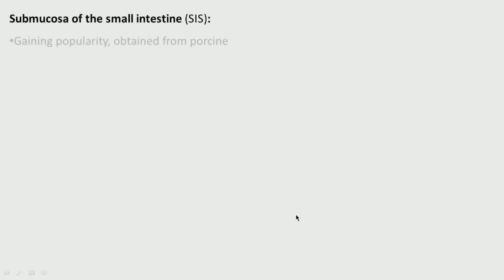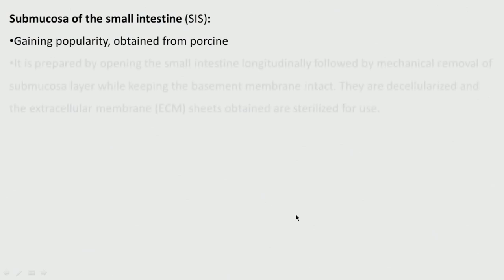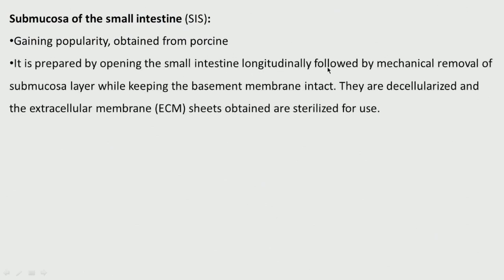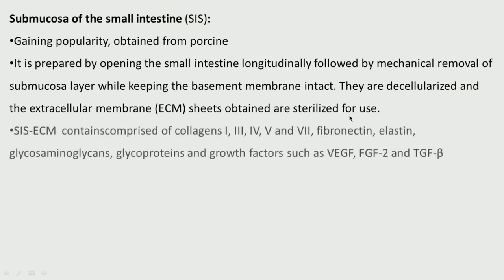The submucosa of the small intestine is gaining popularity from porcine sources. It is prepared by opening the small intestine longitudinally, followed by mechanical removal of the submucosa layer while keeping the basement membrane intact. Then you decellularize the extracellular membrane sheets and sterilize it. This submucosa ECM contains collagen types 1, 3, 4, 5, 7, fibronectin, elastin and quite a lot of growth factors.